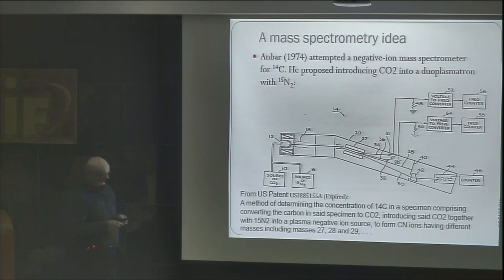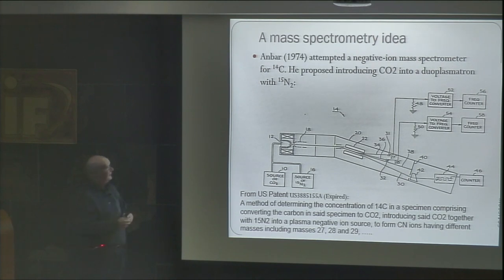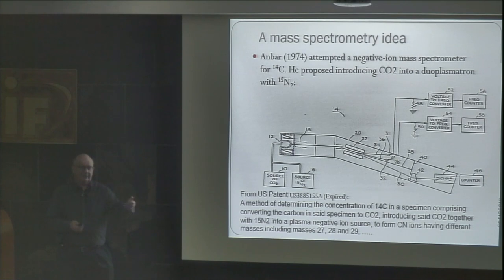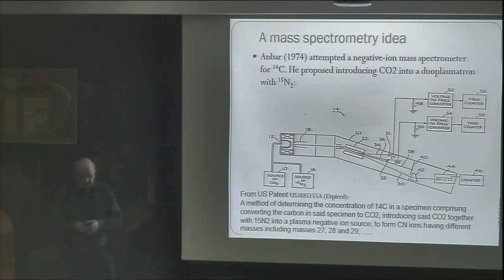They moved to gas counting, where they could produce CO2, methane, or acetylene — the three gases used for counting — and could avoid the nuclear fallout background problem. Also liquid scintillation counting. This went on from the 50s until the 1970s.